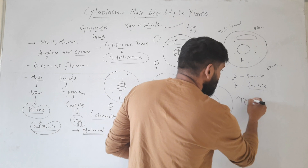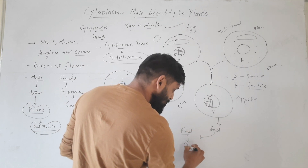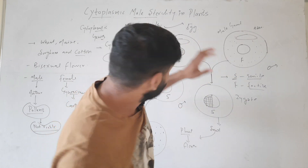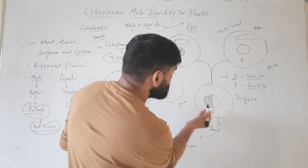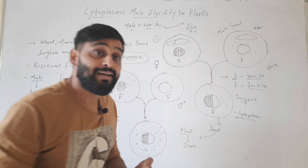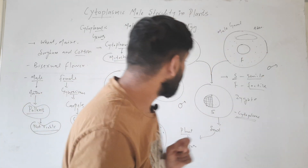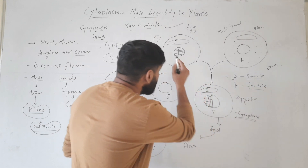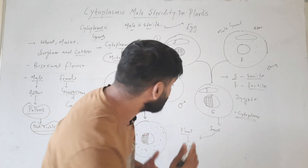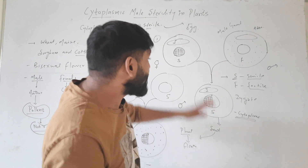So when they fuse, there will be a zygote. And we know that this zygote will form a seed, and this seed will form a plant, and that plant will flower with male and female reproductive structures. Now, we know that nuclear DNA is taken half from mother and half from father. But in the case of cytoplasm, all of the cytoplasm is taken from the mother. Means the genes present inside the cytoplasm of the mother will be inherited to this zygote. So this zygote forms a plant, and it will be of sterile type because the cytoplasm of the mother is sterile. This shows extranuclear inheritance and the inheritance is maternal.